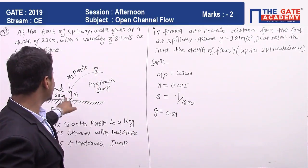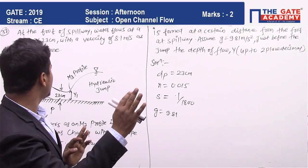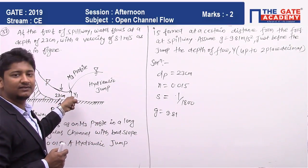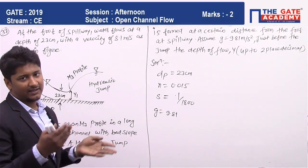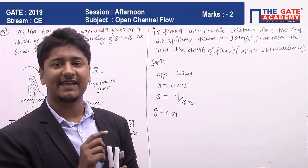Velocity is given, so you can find the discharge. The discharge at this point will be B × 0.23 × 8.1, and this discharge is going to be equal at this point because of continuity - same section.